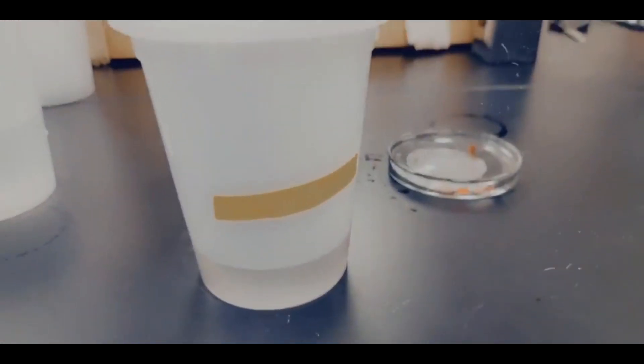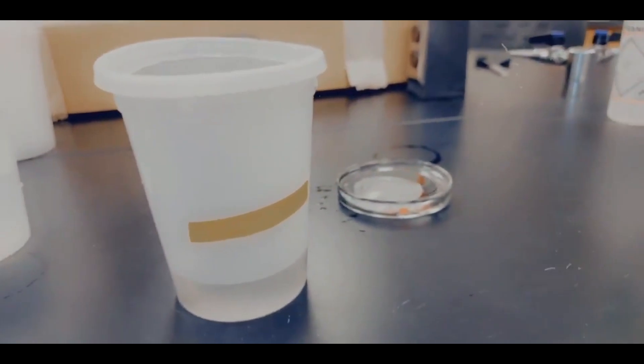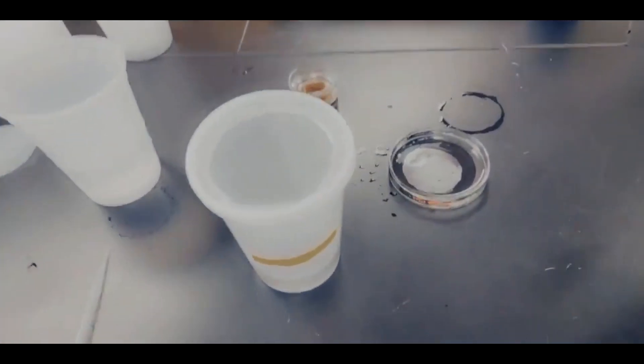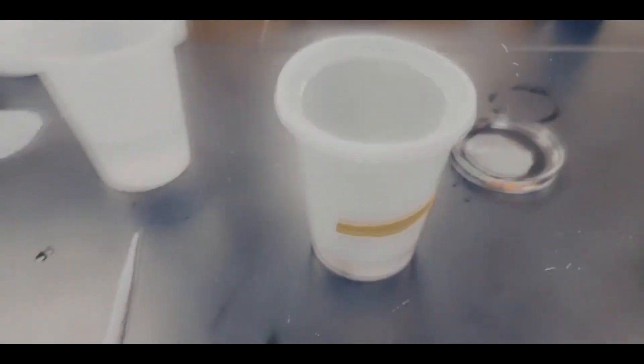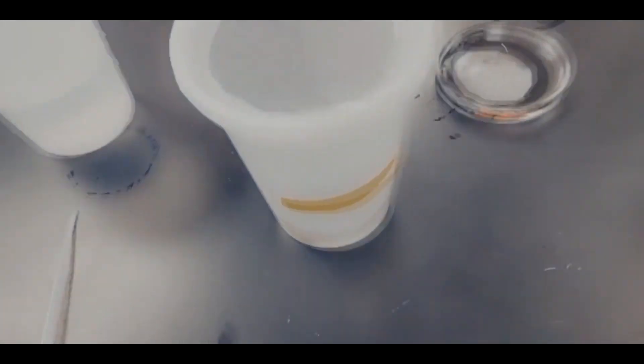And then last but not least, don't forget to make a label. This is a little bit hard to see right now, but maybe I'll re-read it. But you can write where you collected the nymph, on what date, any data you think you might want. It's just good practice to label things so you know what it is and where it came from. So hopefully this nymph will metamorphose in the next week or two.